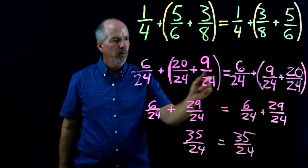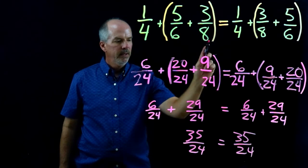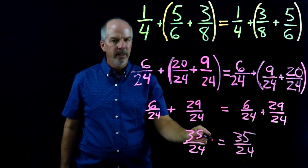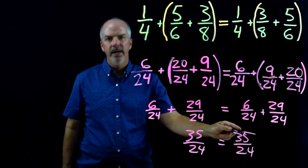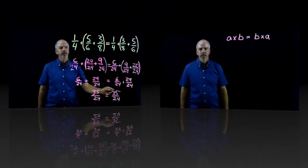And just for demonstration, if we work this out, you would see that this does equal 35 over 24. The improper fraction does equal the improper fraction 35 over 24.